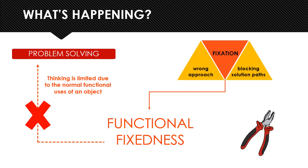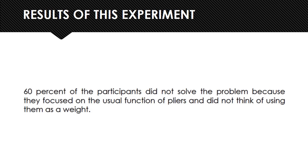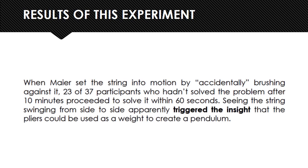For example, a pair of pliers, which we conventionally recognize as a manual tool, did not seem at first glance to be a weight for a pendulum. The results of Maier's experiment tell us that firstly, 60% of participants did not solve the problem because they focused on the usual function of the pliers and did not think of using them as a weight. Secondly, when Maier set the string into motion by accidentally brushing against it, 23 out of 37 participants who hadn't solved the problem after 10 minutes proceeded to solve it within 60 seconds — seeing the string swinging triggered the insight that the pliers could be used as a weight to create a pendulum.